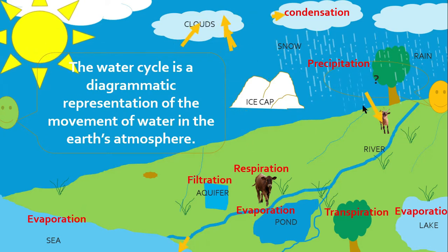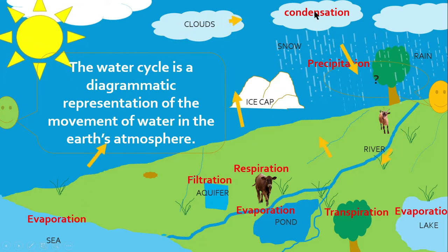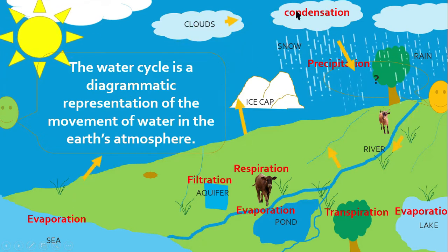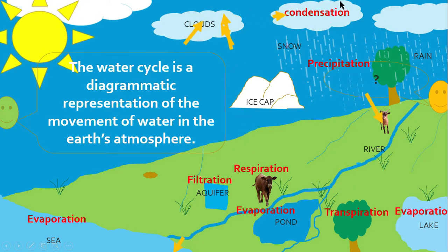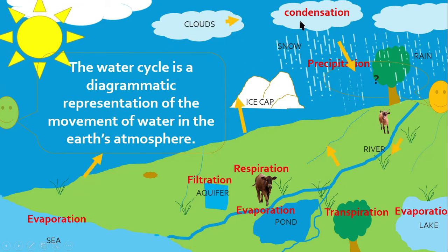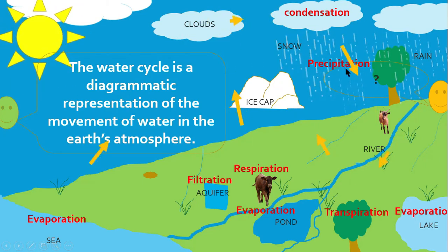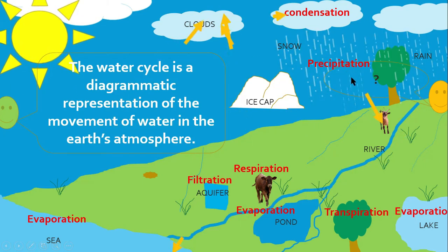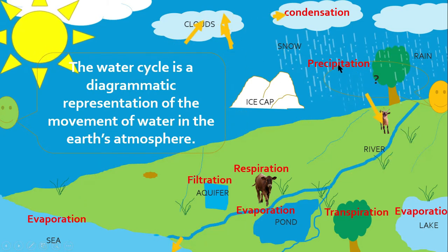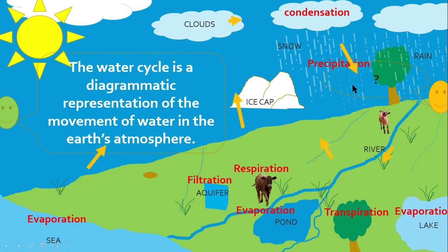Let's look at the water cycle in a little more detail. Follow on your screen. Here in the clouds, we have condensation taking place where the water droplets are cooled and excess water droplets form cloud. This cloud, after some time with some heat energy, causes precipitation. Precipitation comes in the form of rain and snow, as you can see here — it is raining and snowing.